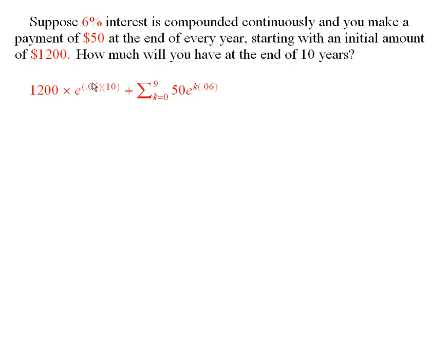And the interest rate is .06, and so since it's compounded continuously, you have e to the 10 times .06 times 1200. Then there are those other payments.